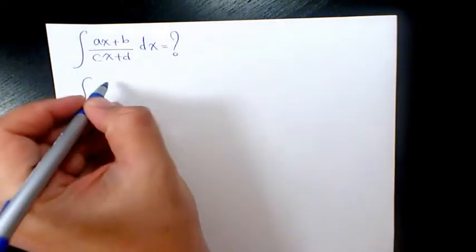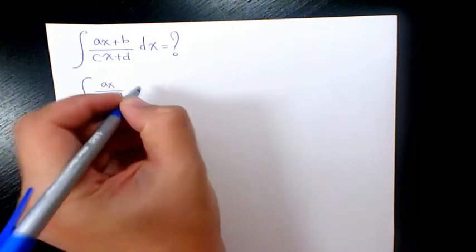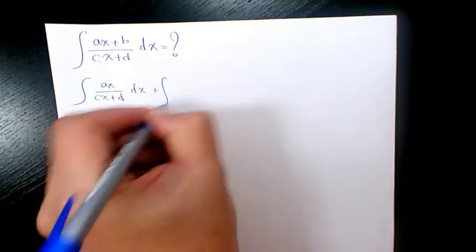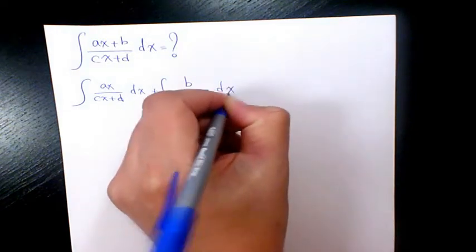First thing I'm going to do is separate these two in half: ax over cx plus d dx, plus b over cx plus d dx.